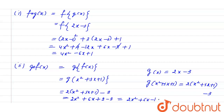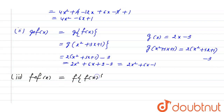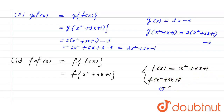Now we can calculate the value of gof. In the third case, we have to calculate the value of fof. fof means f of f(x). The value of f(x) is x squared plus 3x plus 1. We need to calculate f of (x squared plus 3x plus 1), which means putting x squared plus 3x plus 1 in place of x. We get (x squared plus 3x plus 1) raised to the power 2, plus 3 into (x squared plus 3x plus 1), plus 1.